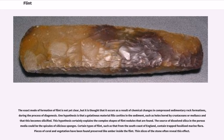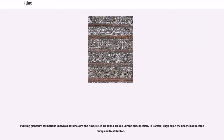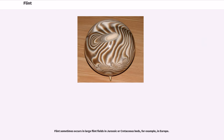Thin slices of the stone often reveal this effect. Puzzling giant flint formations known as paramoudra and flint circles are found around Europe, but especially in Norfolk, England, on the beaches at Beeston Bump and West Runton. Flint sometimes occurs in large flint fields in Jurassic or Cretaceous strata, for example in Europe.